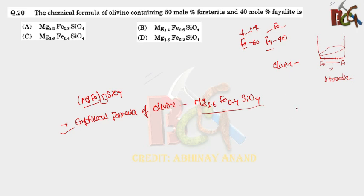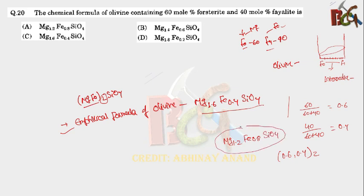So from the question we have more percentage of forsterite. Let's calculate the forsterite percentages. By the basic knowledge of chemistry, 60 divided by 60 plus 40, so it is 0.6, and 40 divided by 60 plus 40, that is 0.4. So it is 0.6 and 0.4, but it should be 2 units. So Mg1.2 and Fe0.8 and SiO4. So this will be the answer according to me.